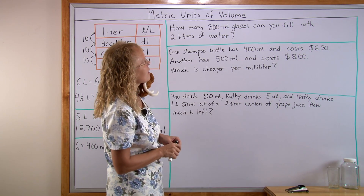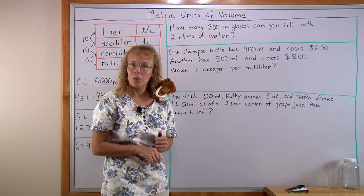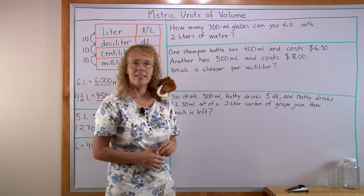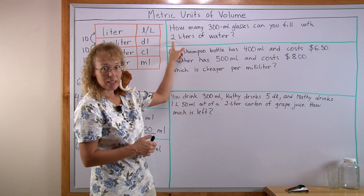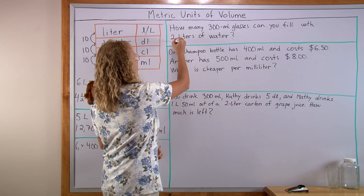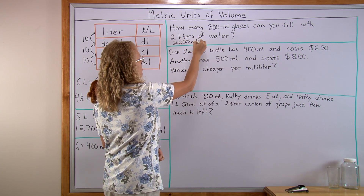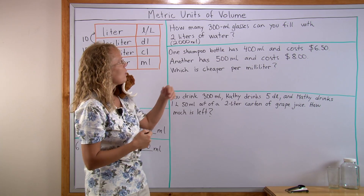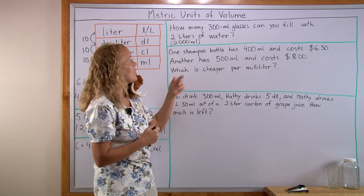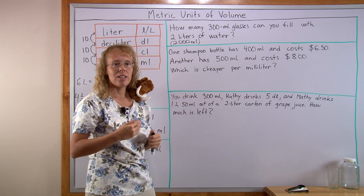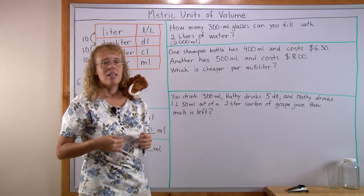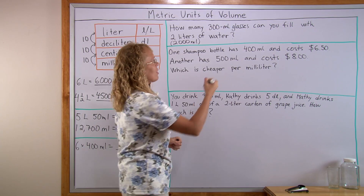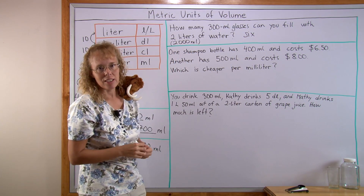How many 300-milliliter glasses can you fill with 2 liters of water? I have that kind of glass right here. We'll simply change 2 liters to milliliters first — that is 2000 milliliters. Now we think: how many times does 300 go into 2000? 5 times 300 is 1500, 6 times 300 is 1800, 7 times 300 is 2100 — so not quite 7. You can fill 6 glasses, and you'll have 200 milliliters left over.